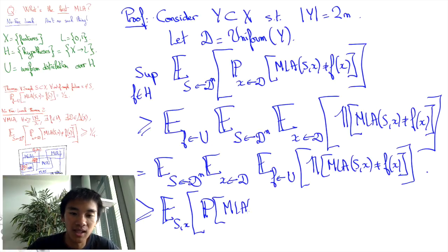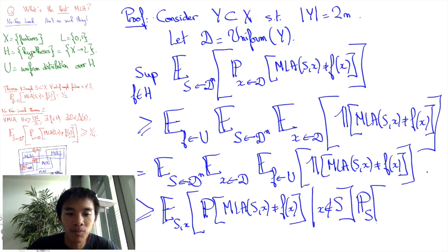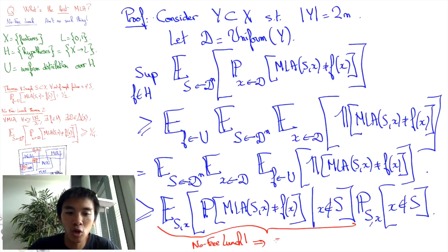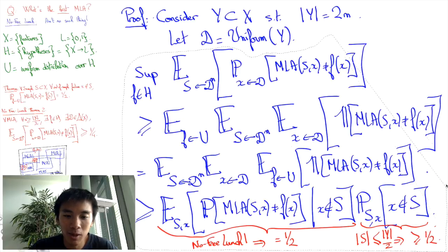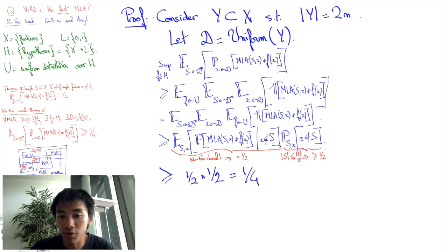Moreover, because the sample size is at most half of the size of X, we know that at least half of the time, this corresponds to the computation of the probability of our first no-free lunch theorem, which we know to be one-half. Thus, there is a prediction function F, for which our machine learning algorithm's expected probability of mispredictions is at least one-fourth.